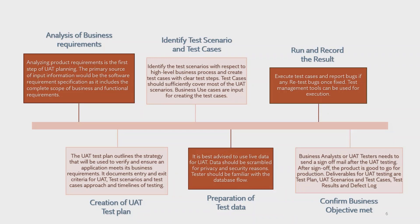Let's discuss the analysis of business requirements in more detail. Initially, the UAT team will plan and analyze the primary sources of input information they have received. If any information is missing, they will reach out to end users and ask for more requirement documents or clarifications. Generally, these clarification meetings are called, and within those meetings, they specify what they understand and start preparing test scenarios and test cases.